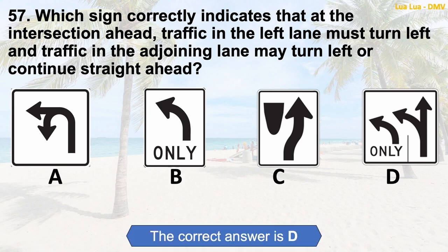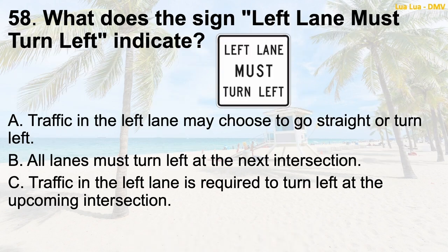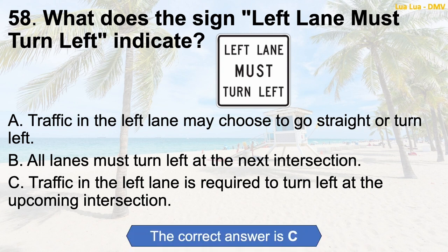Question 58: What does the sign 'left lane must turn left' indicate? A. Traffic in the left lane may choose to go straight or turn left. B. All lanes must turn left at the next intersection. C. Traffic in the left lane is required to turn left at the upcoming intersection. The correct answer is C: Traffic in the left lane is required to turn left at the upcoming intersection.